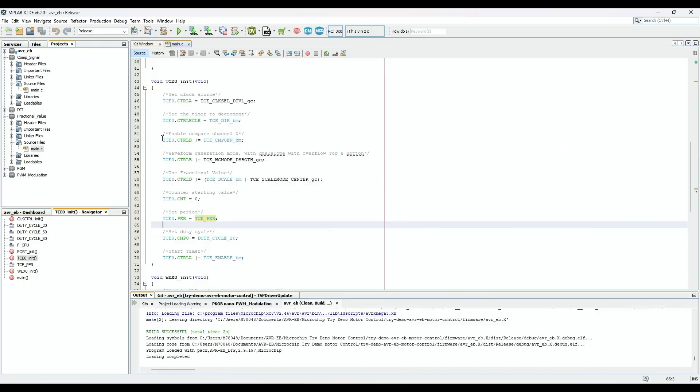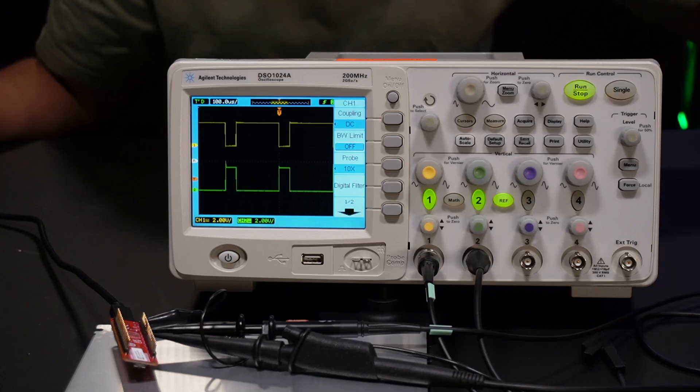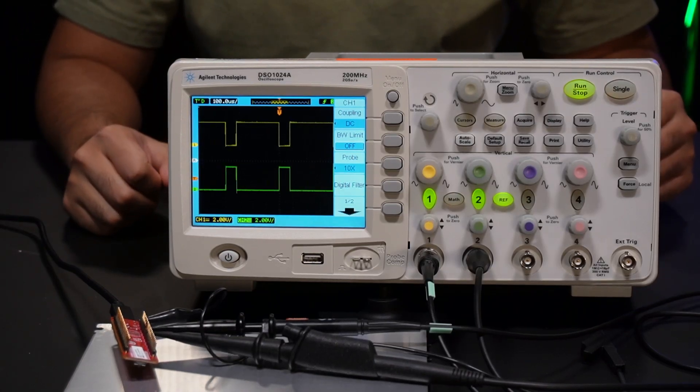Here you can see that I'm currently using only one compare channel, and on the oscilloscope, you can actually see that there are two PWM signals being generated, where one of them is inverted.